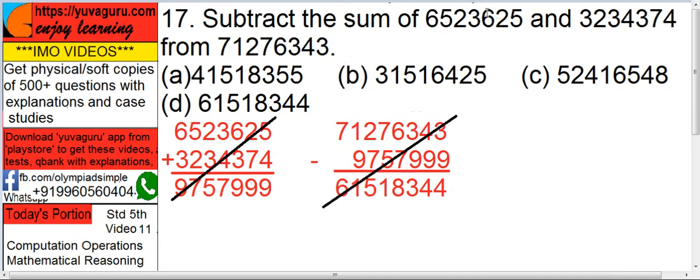Check how many digits are there. 3 plus 3 is 6, 7. Here also 7. So 7 digits here, 7 digits here.